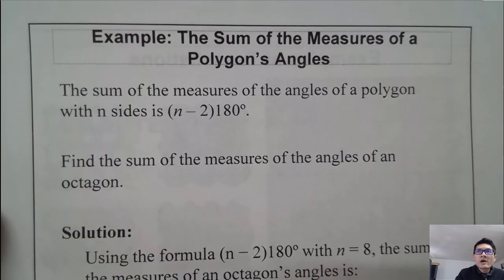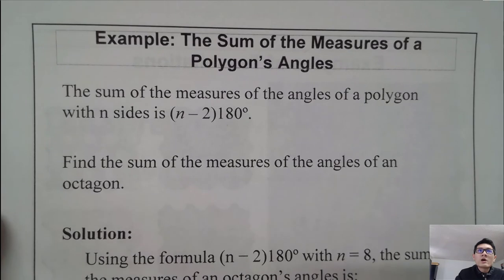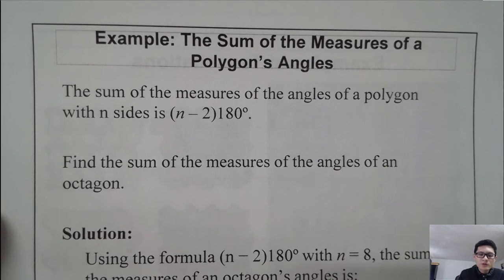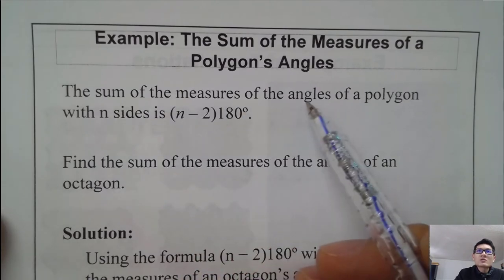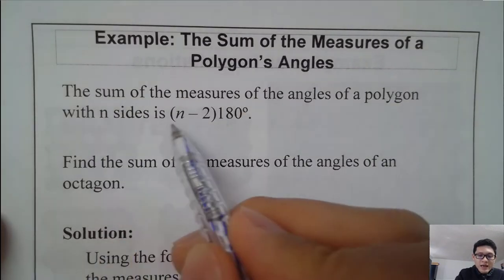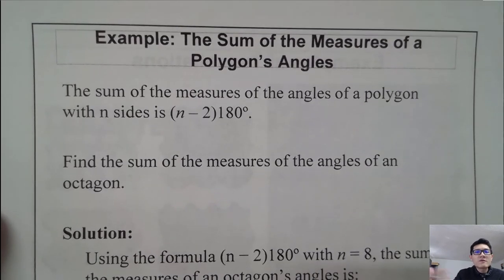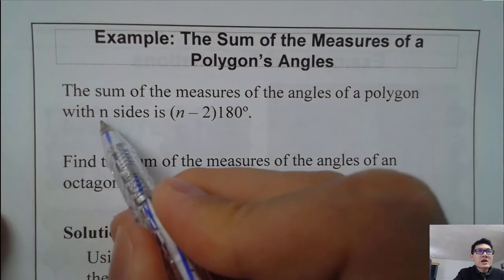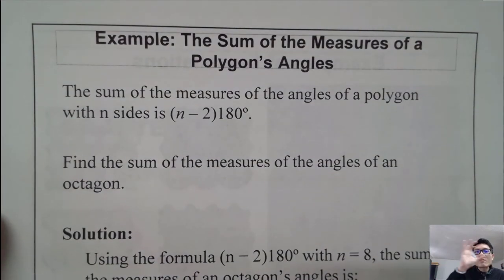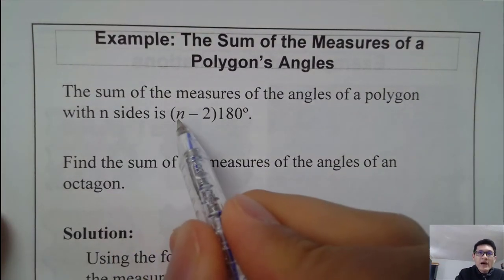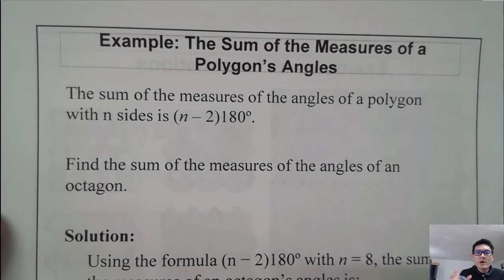Now let's look at the sum of the measures of a polygon's angles. There is a special formula: the sum of all angle measures of a polygon with n sides is (n − 2) × 180 degrees. No matter how many sides you have — three, four, five, heptagon, octagon — n is the number of sides. You subtract 2 from n and then multiply by 180.